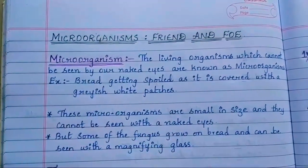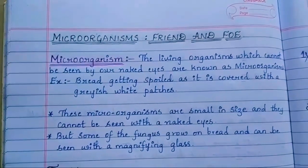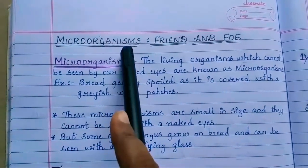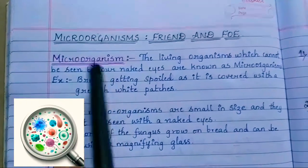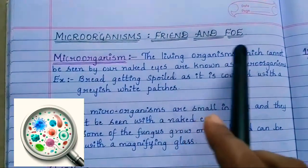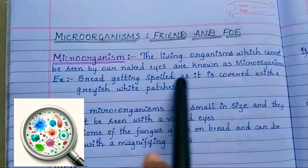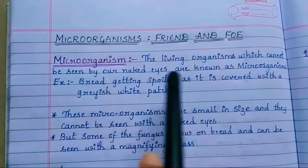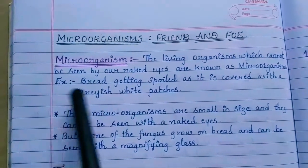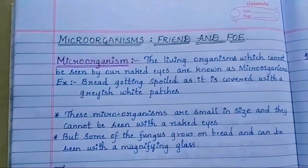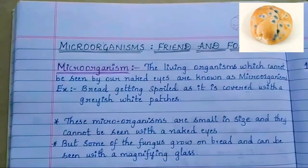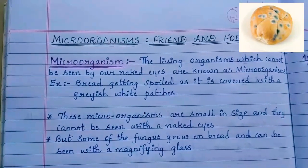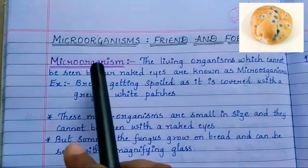We have seen many organisms in our nature like plants, animals, human beings, insects. There is one more type of organism — they are known as microorganisms. The living organisms which cannot be seen by our naked eyes are known as microorganisms. For example, bread getting spoiled is covered with grayish-white patches — you may have noticed black color spots on bread. These are nothing but microorganisms.